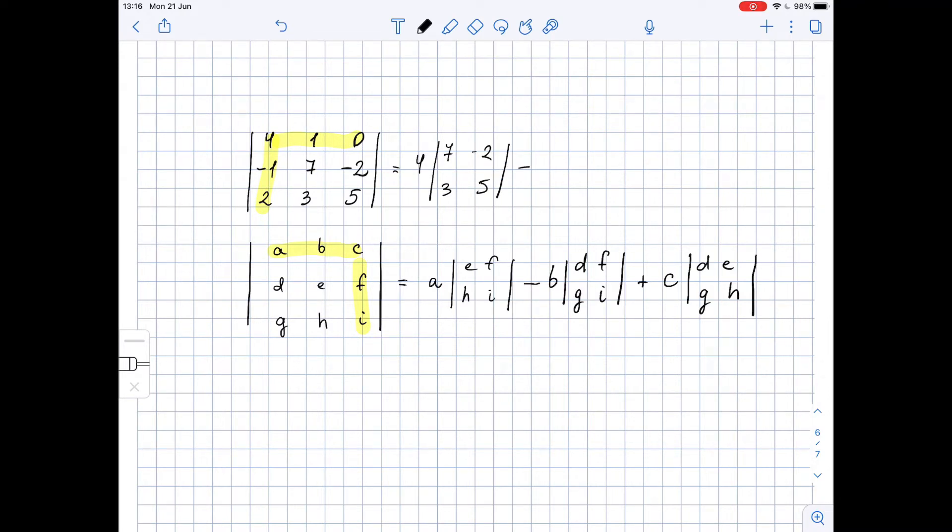Then minus the second element of the first row which is 1 times, now we ignore the first row and the second column, so it's negative 1, negative 2, 2, 5.